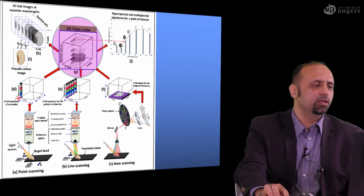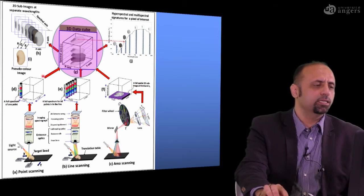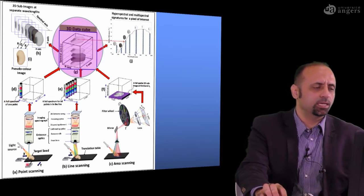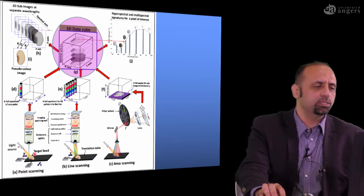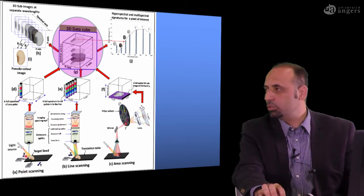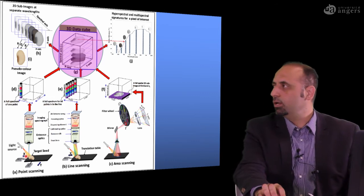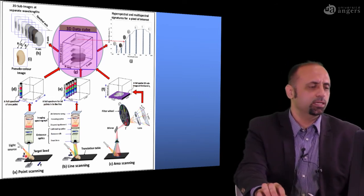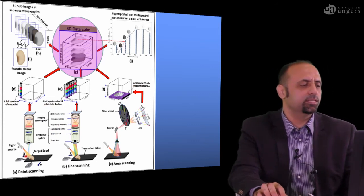Moving to each new line and scanning line by line, you finally obtain one complete 3D data cube. This is called the point scan method. As you can see, it is very slow to acquire one image using the point scan scenario.